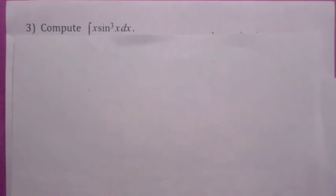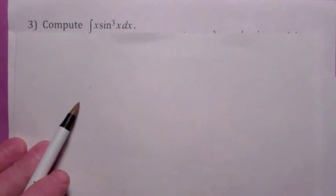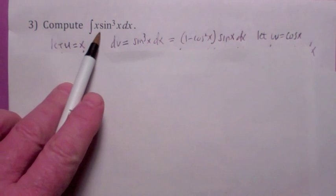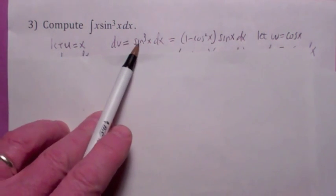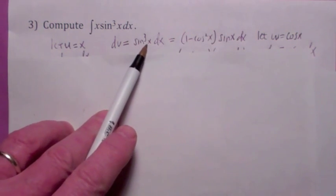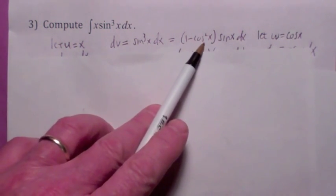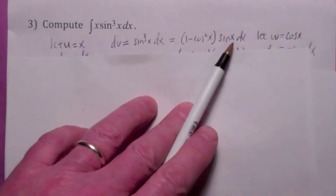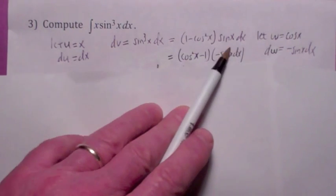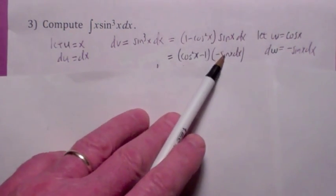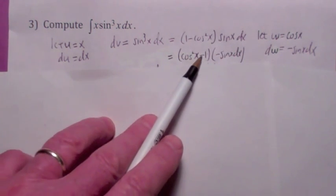Let's take a look at this integral. You should be suspicious that we're going to use integration by parts because we have a product of two functions. It makes sense to let u equal x, and then dv is everything else: sine cubed x dx. So you need to integrate v—that means integrating sine cubed x dx. Since the power of sine is odd, you break off sine x, and write sine squared x in terms of cosine as 1 minus cosine squared, giving you 1 minus cosine squared times sine x dx. To find v, make the substitution w equals cosine x, so dw equals negative sine x dx.